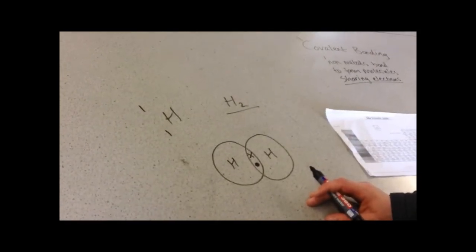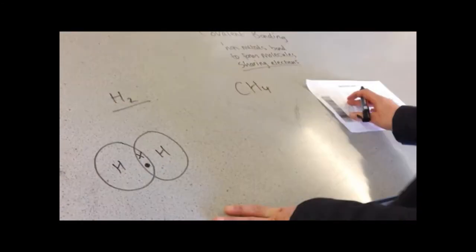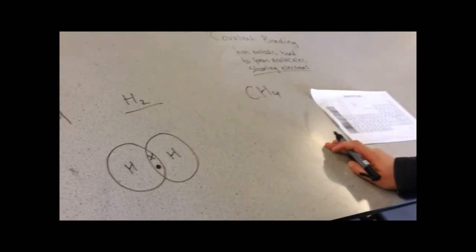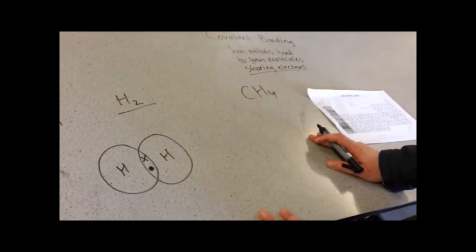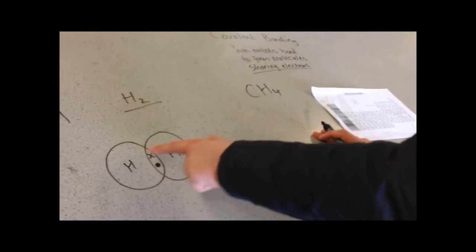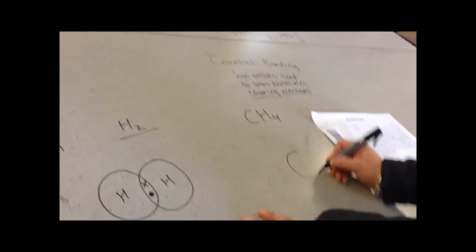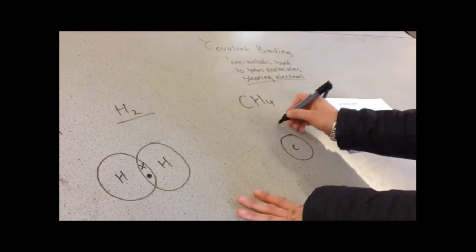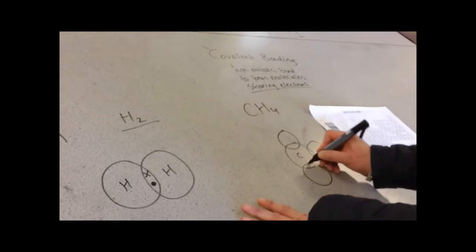Let's move on to methane. Methane is CH4. Anything that involves hydrogen is pretty straightforward because we know it has only one electron. It wants one more electron to get a full outer shell. CH4 has one carbon and four hydrogens, so we draw it like that.